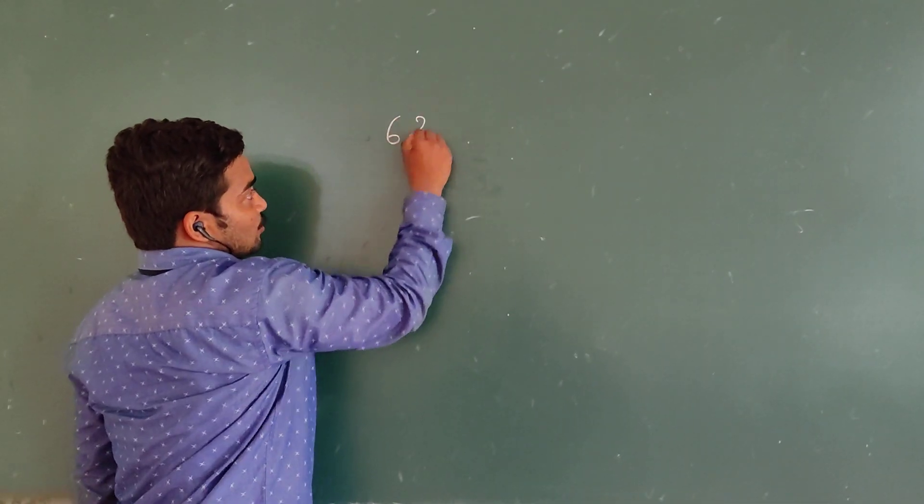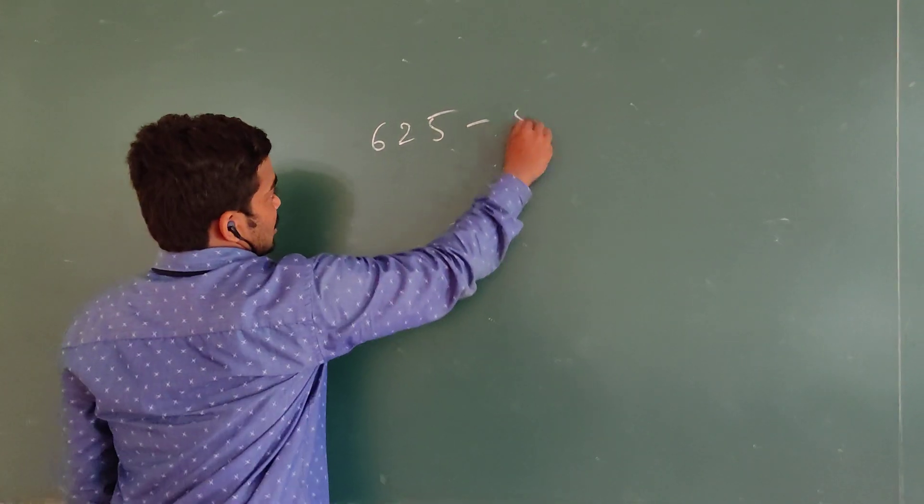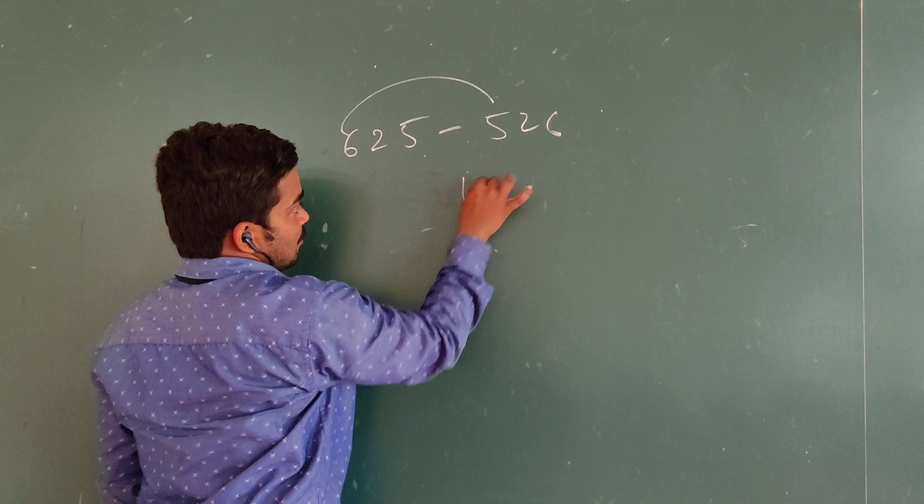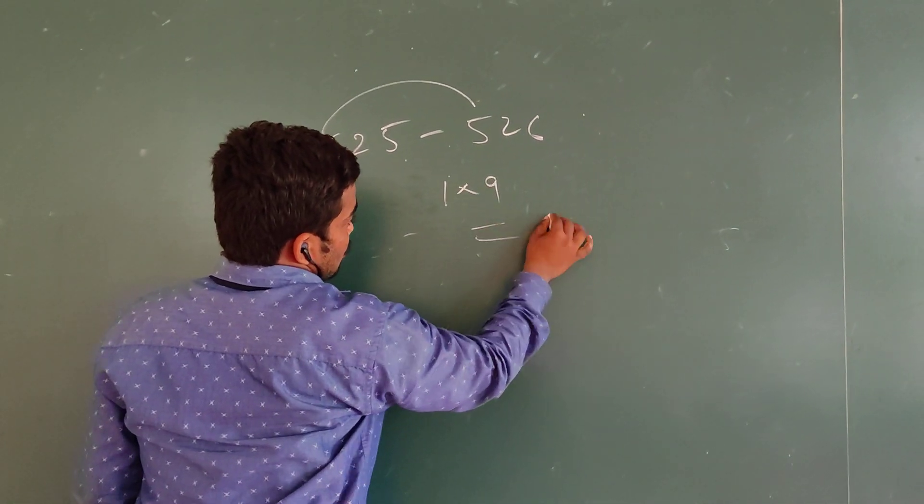That is 625. Now, I am going to reverse the number: 526. 6 minus 5, how much? 1, multiplied with 9 is 9. So, 9 is your answer.